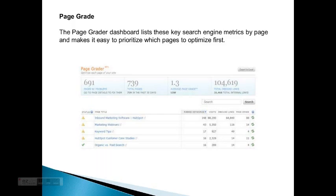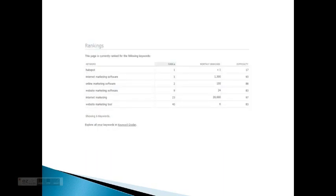More importantly, the bottom shows the status and the page title, the keyword, the number of visits, the inbound links, and the page grade. These are important metrics that you need to take a look at. You can get them for all the keyword tags.